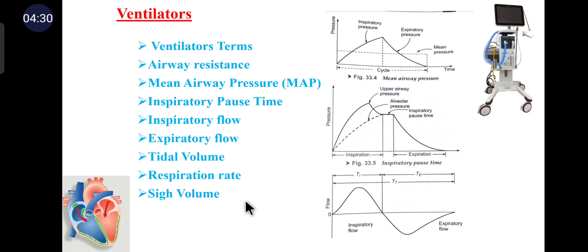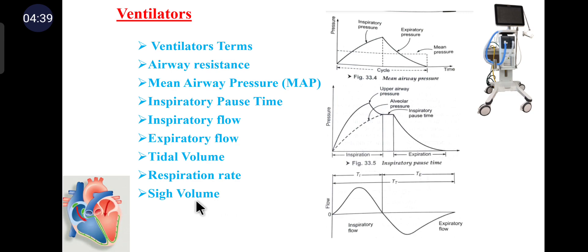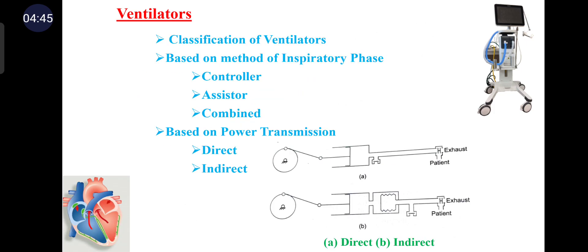Sigh volume is defined as 150 percent of the set tidal volume. Based on the tidal volume, we can calculate the sigh volume. Ventilators are classified by various methods based on the method of the inspiration phase: controller, assistor, and combined.